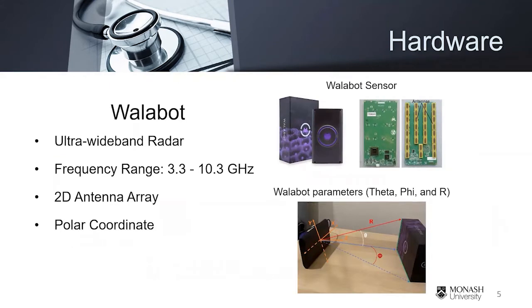I will talk about the hardware we use. As I mentioned in the topic, we used radar to do the breathing monitoring and the radar we choose is called Walabot. It is a low-cost, ultra-wideband, radar-based device. The frequency range is from 3.3 to 10.3 gigahertz, which can cover 10 meters detection range.